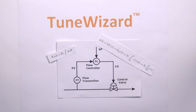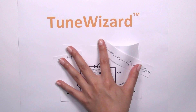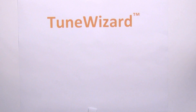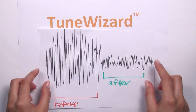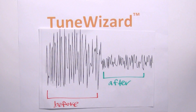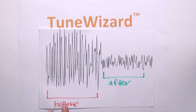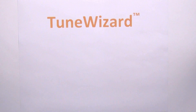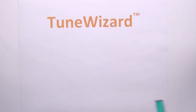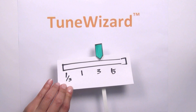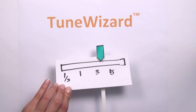With TuneWizard, you can interpret and calculate the tuning constants for hundreds of different control equations for DCS systems. TuneWizard allows you to compare the before and after effects of various tuning constants so you can see which set you want to use. It has an easy-to-use slider bar to allow you to calculate the speed of the controller response.